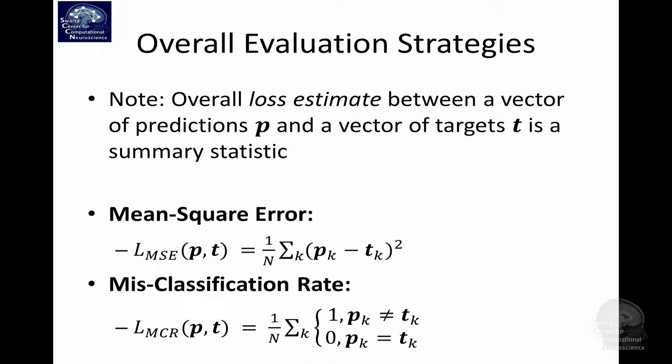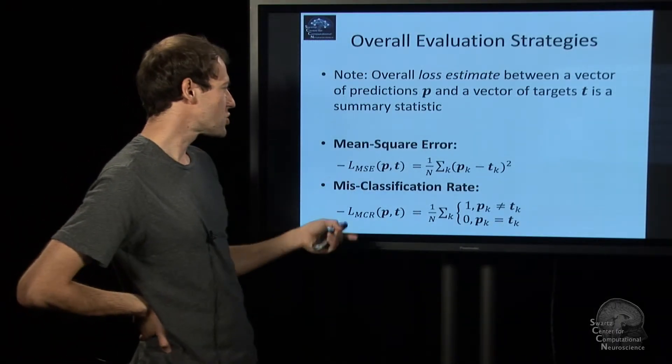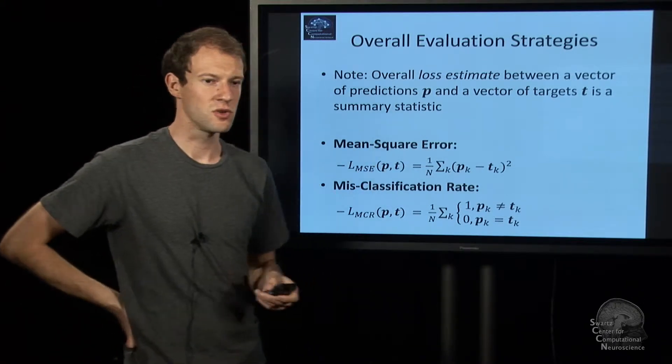And that is the matter of loss estimation. So you estimate the misfit between what your model predicted and what you know is the ground truth. So it's a measure between predictions and known target values. And there's various metrics that you can use.